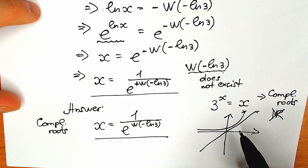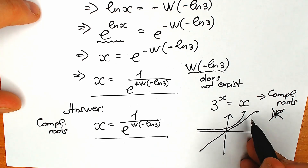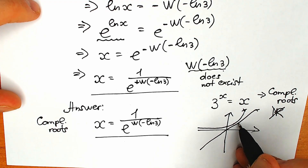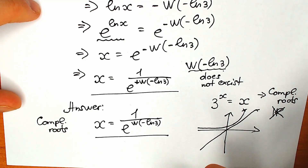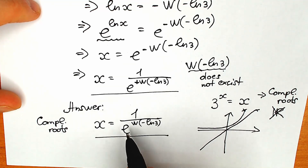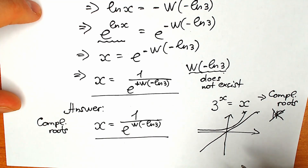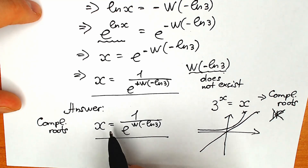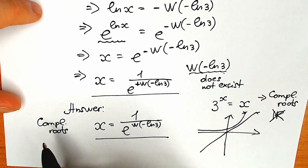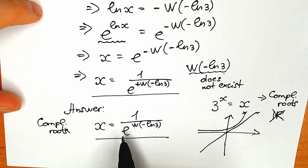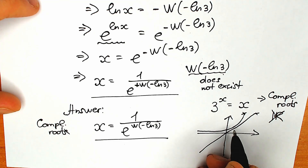You can easily sketch this graph at the start — it's very suspicious because we have an exponential function and a linear function, and it looks like they might not intersect. There's also a case where maybe they intersect at one point, or even two points of intersection. But when you solve it and see that this is a complex root, you can sketch the graph and confirm that there are no points of intersection, which is an extremely great thing to show your teacher after this answer. These are our complex roots — we have only one complex root and no real intersection points.